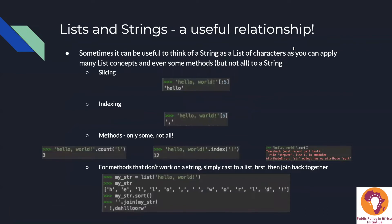Lists and strings have a useful relationship. You can think of a string as a list of characters, as you can apply many list concepts and some methods to a string. For example, you can apply slicing — to get the first five characters of a string, you use the same bracket notation. You can also index strings: zero-indexing applies, so getting index five of 'Hello, World!' returns the comma, since that's the sixth character.